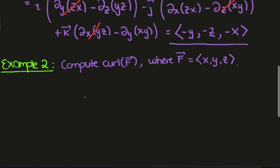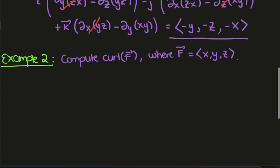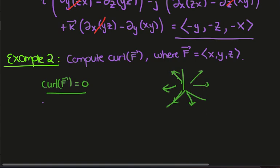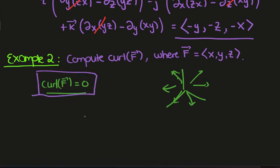Now let's compute the curl of F-hat which is (x, y, z). We should expect the curl to be zero in this case because this vector field is easy to understand — it points outward in all the radial directions, so there's no twisting component. Given our geometric understanding of curl, the curl should vanish.